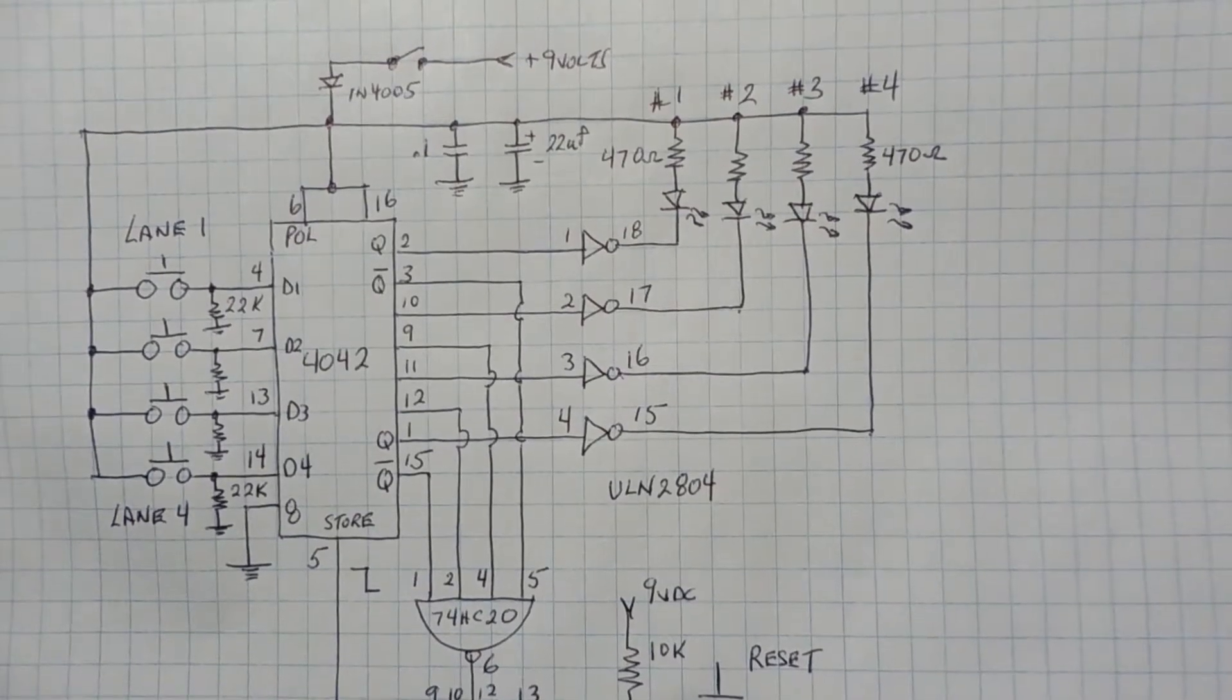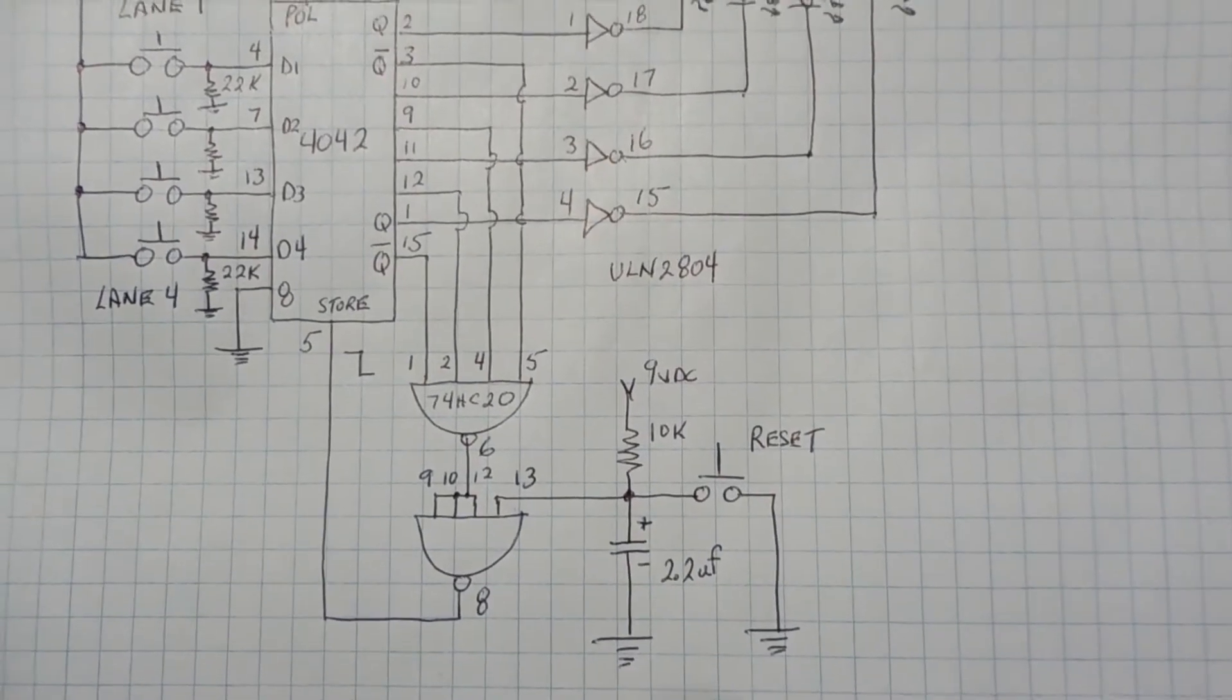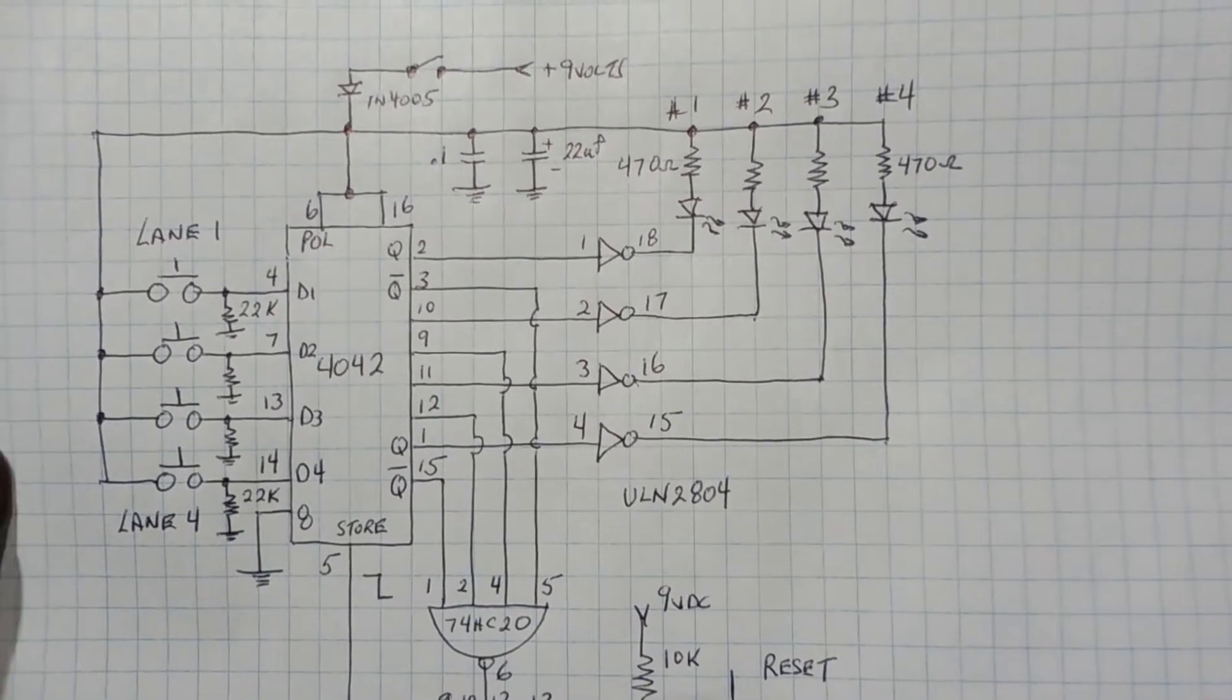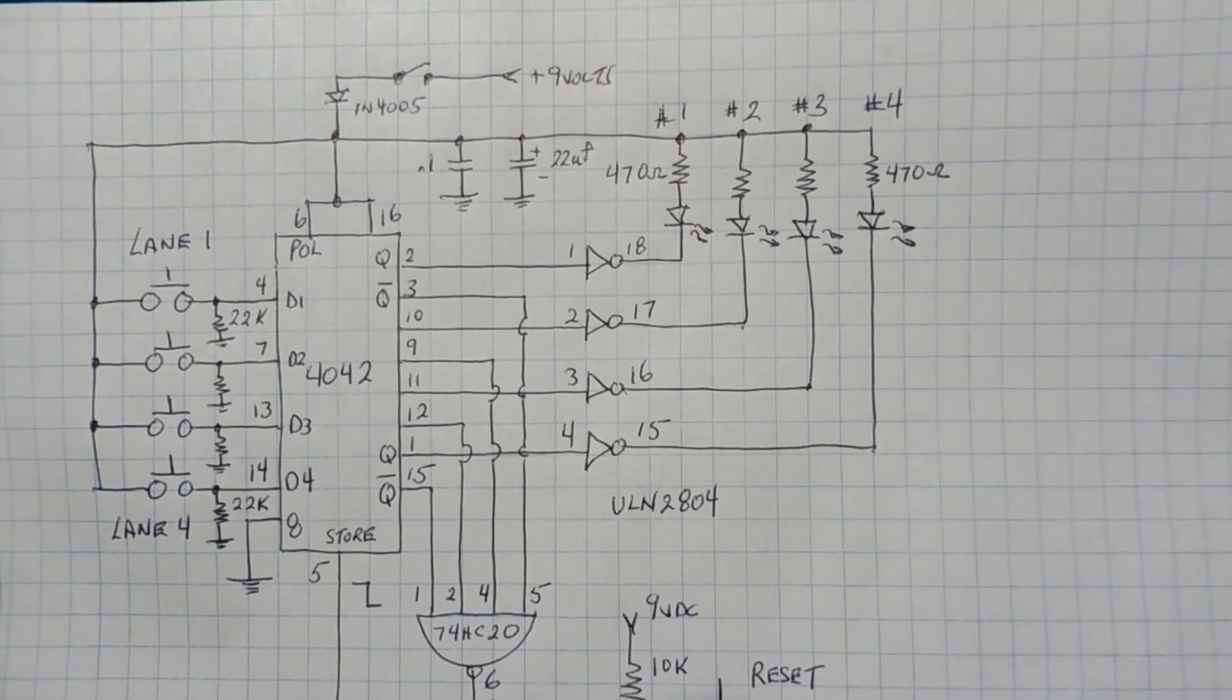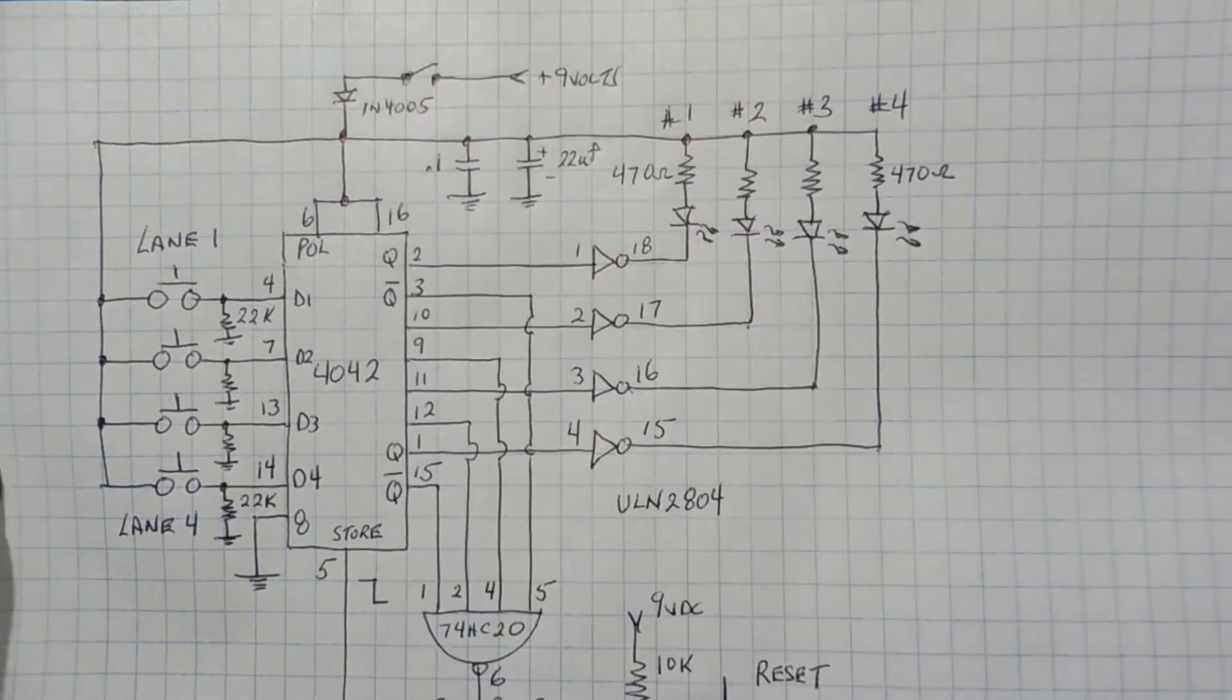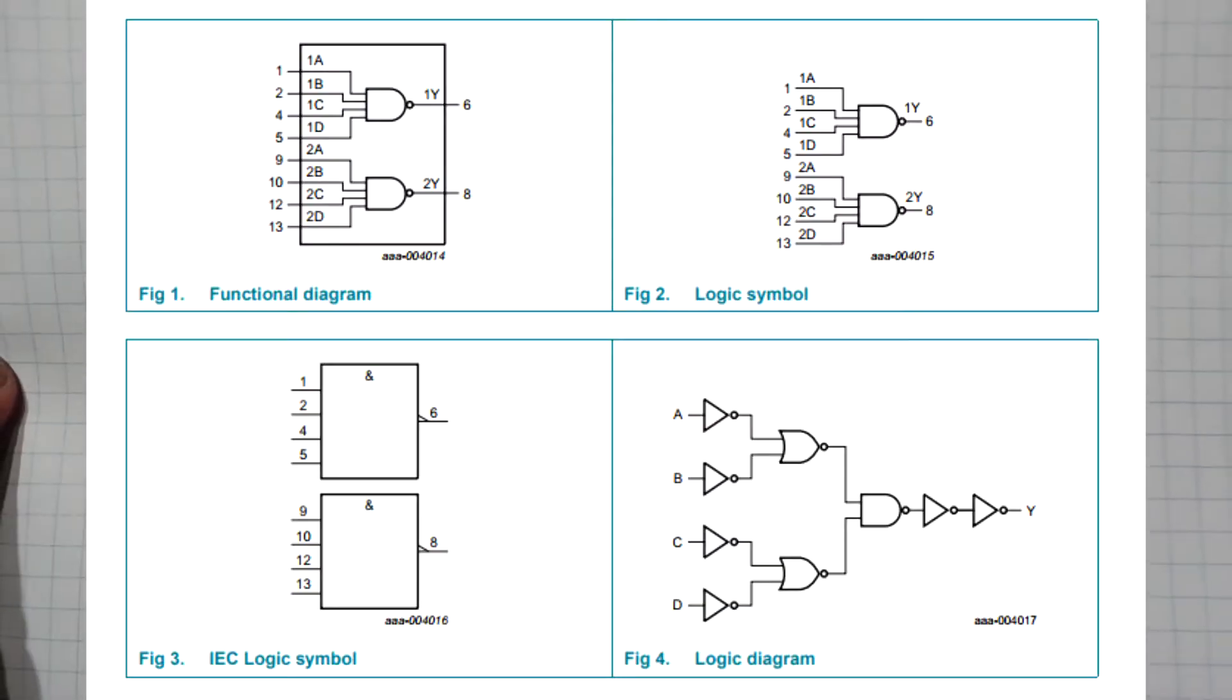Okay, here's the schematic diagram of the Pinewood Derby decision maker. There's basically three ICs that make up this circuit. There's a 4042 which is a quad D flip-flop, so there's four flip-flops in one package. There's a ULN2804 which is a Darlington driver which drives the LEDs. And then there's a 74HC20 which is a four input NAND gate. There's actually two of them in a package.